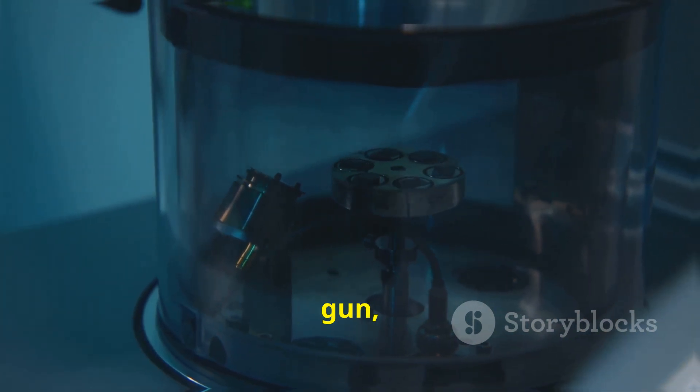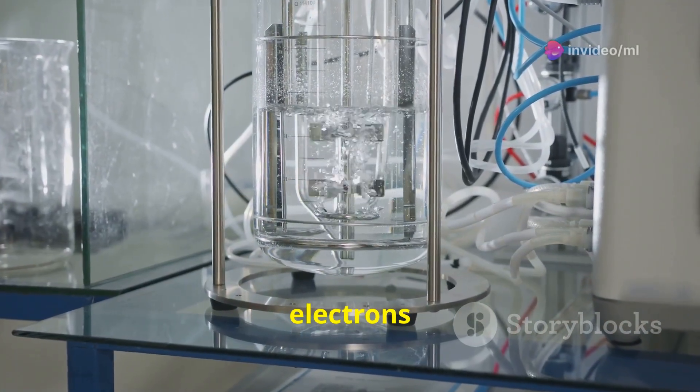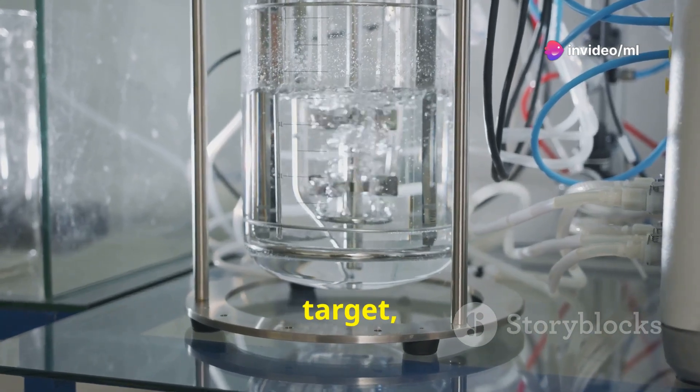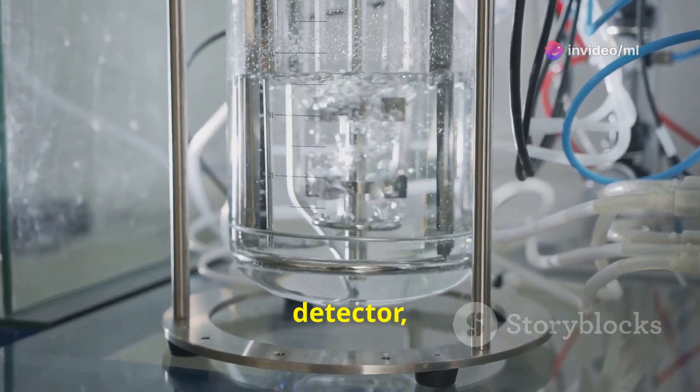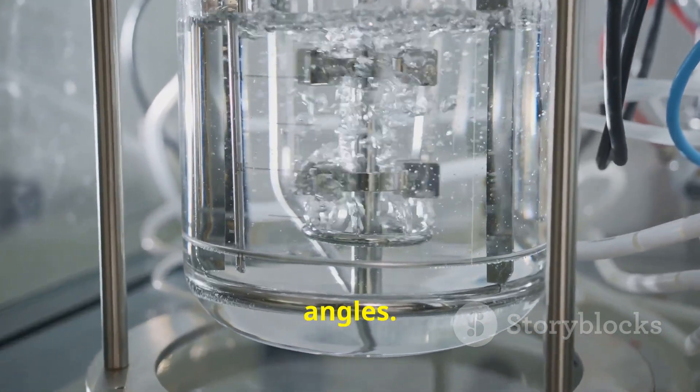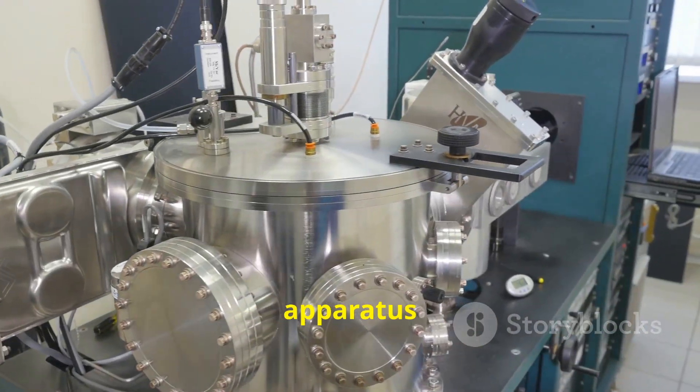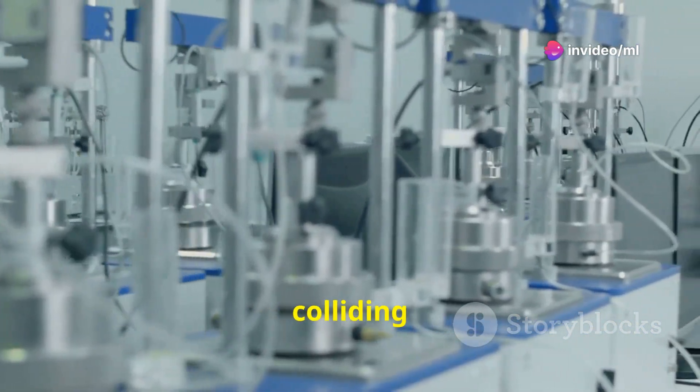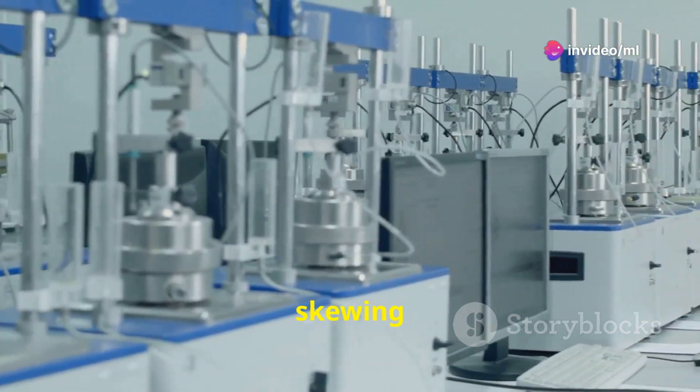An electron gun, which could fire a beam of electrons at a specific target, a nickel crystal acting as the target, and a detector which could measure the intensity of the scattered electrons at various angles. The entire apparatus was housed within a vacuum chamber to prevent the electrons from colliding with air molecules and skewing the results.